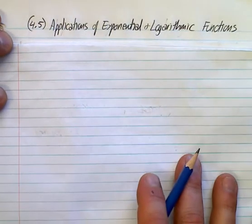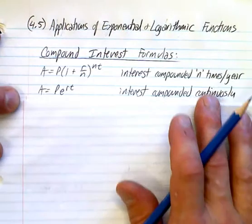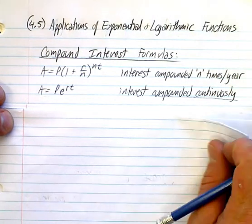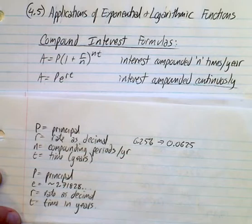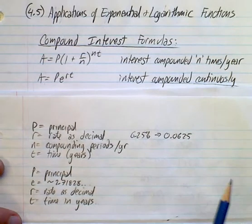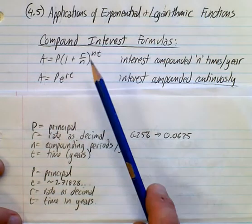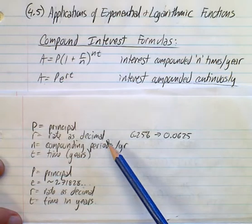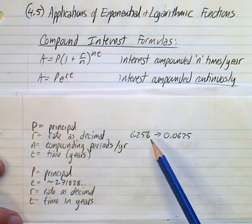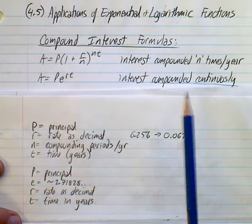We looked at the beginnings of this chapter, section 4.1. Compound interest was one of those things we looked at. Here's an example of two versions of your compound interest. And what I'd like to show you quickly here are what these variables mean.